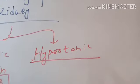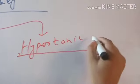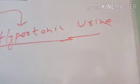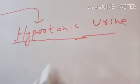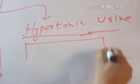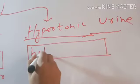Hypertonic urine can also be called concentrated urine. This urine is produced in hot summer days.